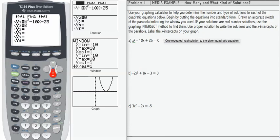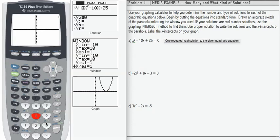I'd like to use the intersect process to find out what the solution is. Second, calc number 5, intersect, and then press enter three times to get to the intersection, which is 5, 0.